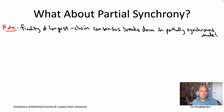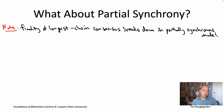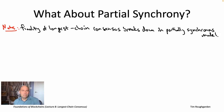In the partially synchronous model, messages can be delayed arbitrarily. There is a GST — a global stabilization time — after which you revert back to synchronous mode. But remember, GST is unknown a priori; the protocol has no knowledge of it, and it can be arbitrarily large (finite, but arbitrarily large). Let's think about a message delivery adversary using the power of the partially synchronous model in the simplest possible way: through a network partition.